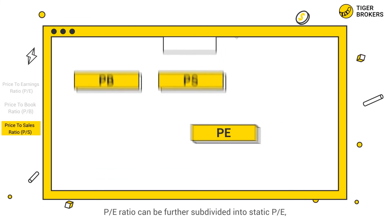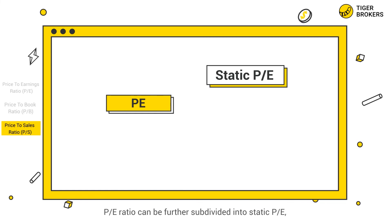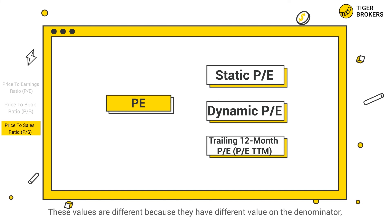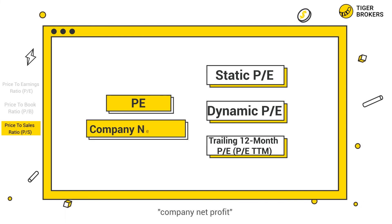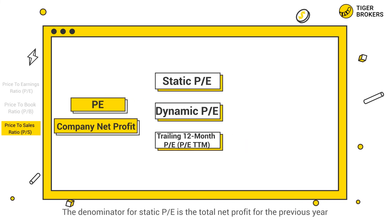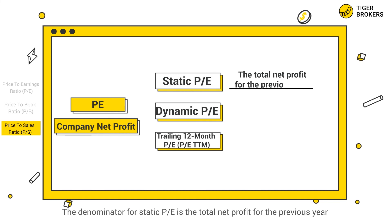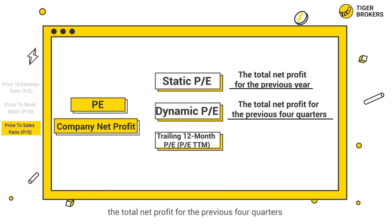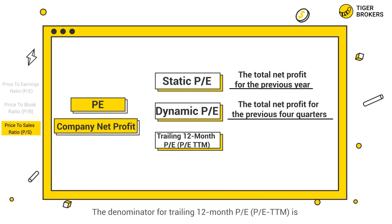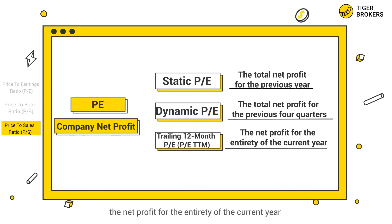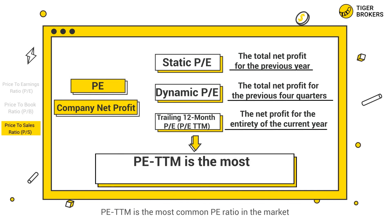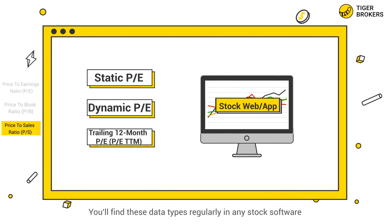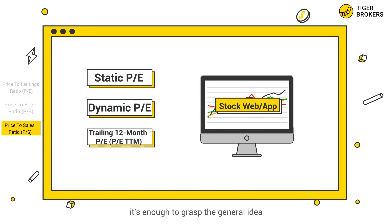Here's an extra little tidbit. PE ratio can be further subdivided into static PE, dynamic PE, and trailing 12-month PE. These values differ because they use different figures in the denominator — company net profit. The denominator of static PE is the total net profit for the previous year. The denominator of dynamic PE is the total net profit for the previous four quarters. The denominator for trailing 12-month PE is the net profit for the entirety of the current year. PE-TTM is the most common PE ratio in the market and you'll find it regularly in any stock software. We don't need to study them in depth — it's enough to grasp the general idea.